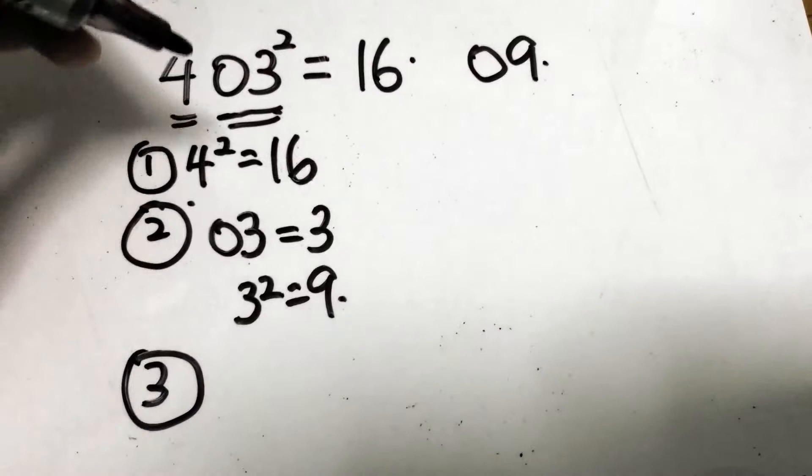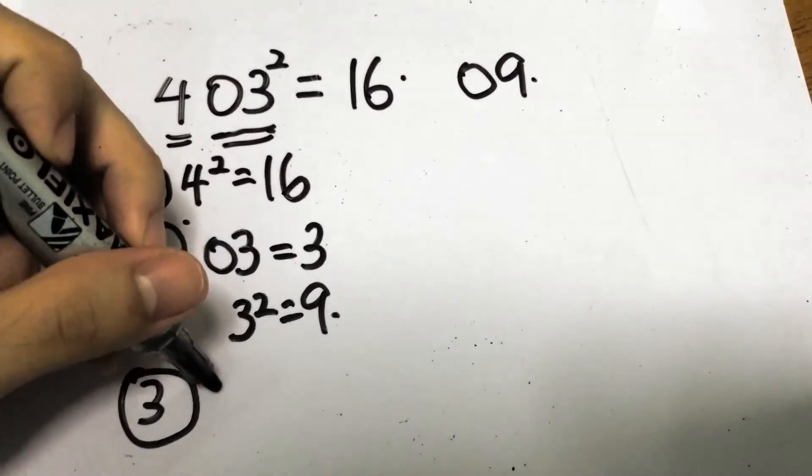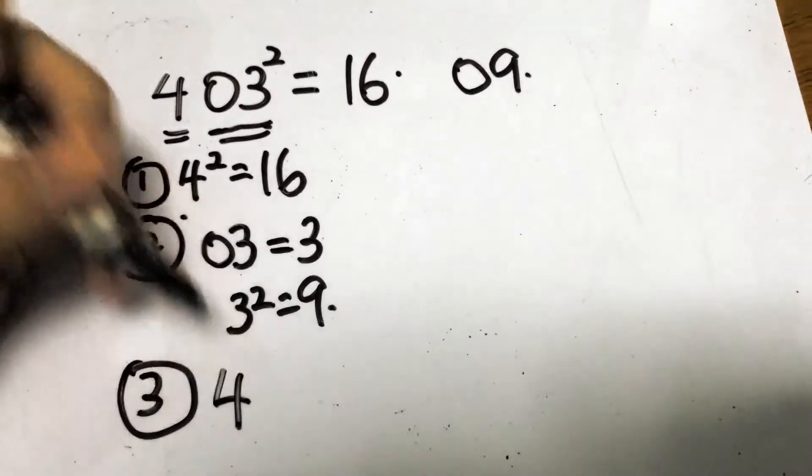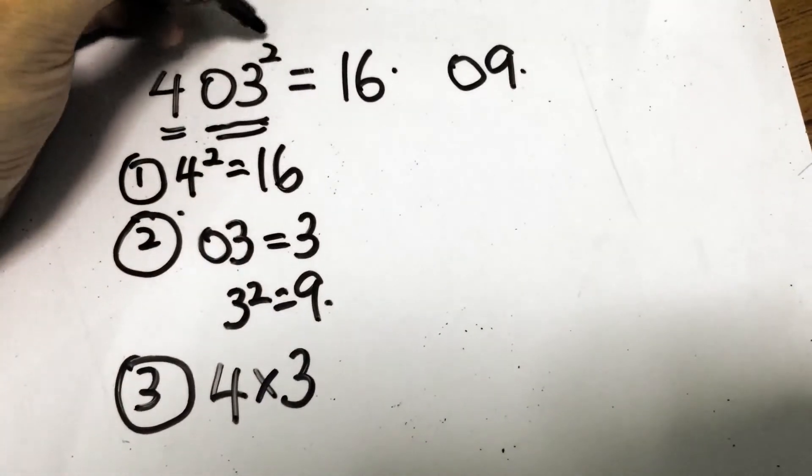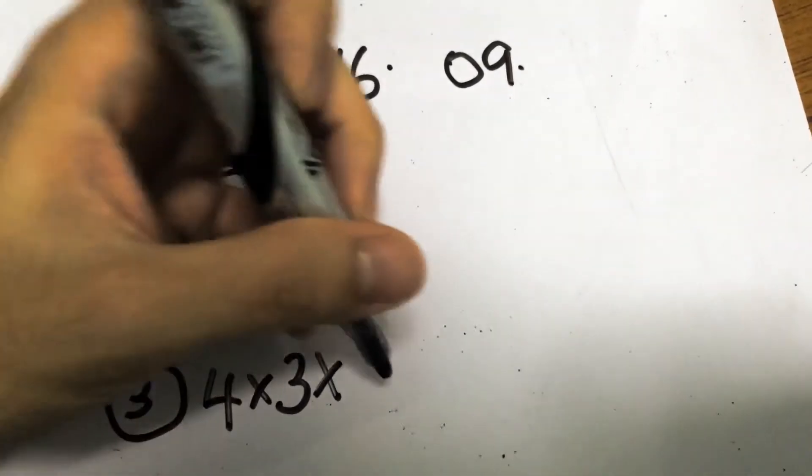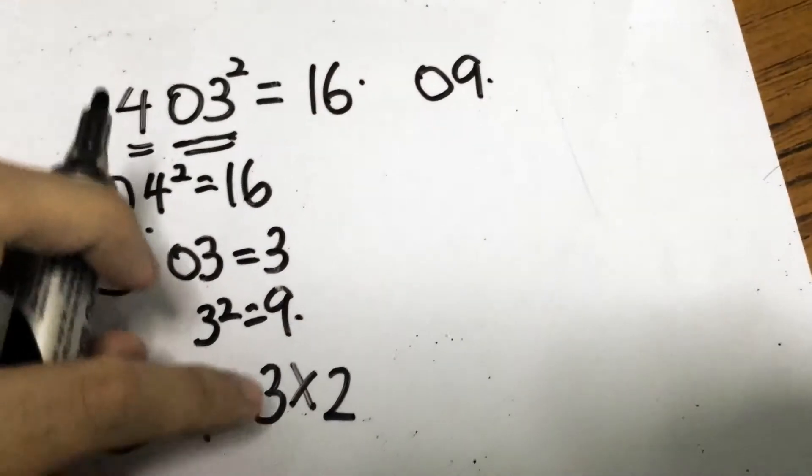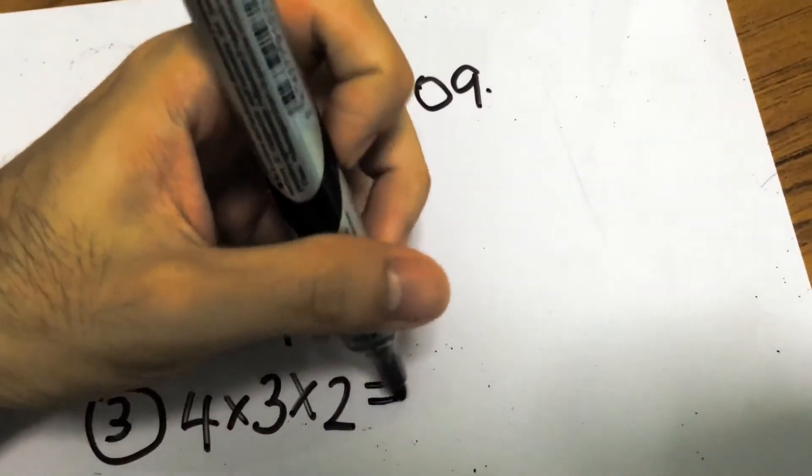And last but not least what we do is that we will take the first digit of the value itself that will be 4 times the last digit itself that will be 3 times this power itself which is 2. So the answer to it is actually 24.